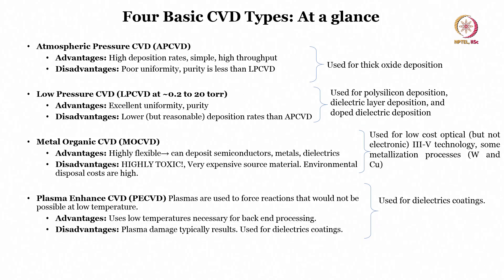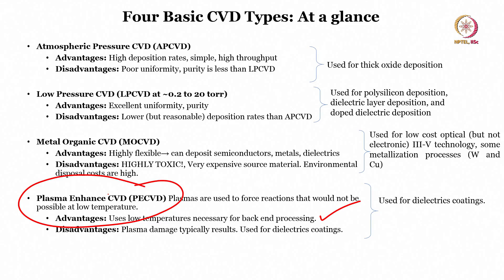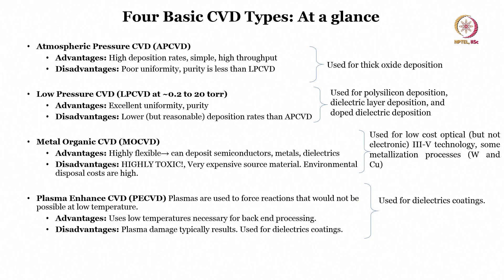APCVD is used for thick oxide deposition; LPCVD is used for polysilicon deposition; MOCVD is used for low-cost optical or III-V technology. PECVD (plasma enhanced chemical vapor deposition) uses plasmas to force reactions not possible at low temperatures. Its biggest advantage is the low temperatures required for back-end processing. The limitation is potential physical plasma damage to the film. PECVD can also be used to deposit silicon dioxide, silicon nitride, and so on.